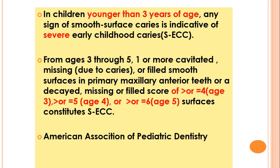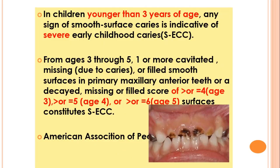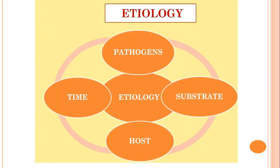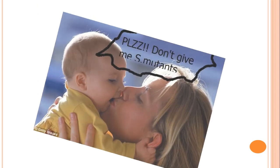This criteria was also given by the American Academy of Pediatric Dentistry. Here we can see what early childhood caries looks like. Talking about the etiology, it is a multi-factorial disease — pathogens, time, substrate, and host are all required for the disease process.